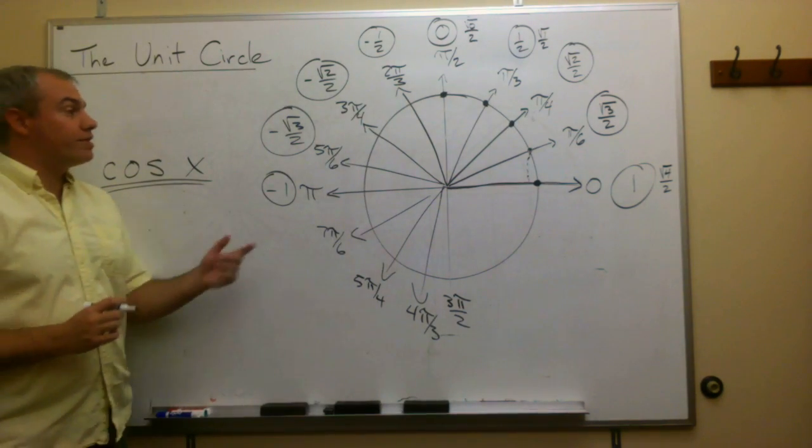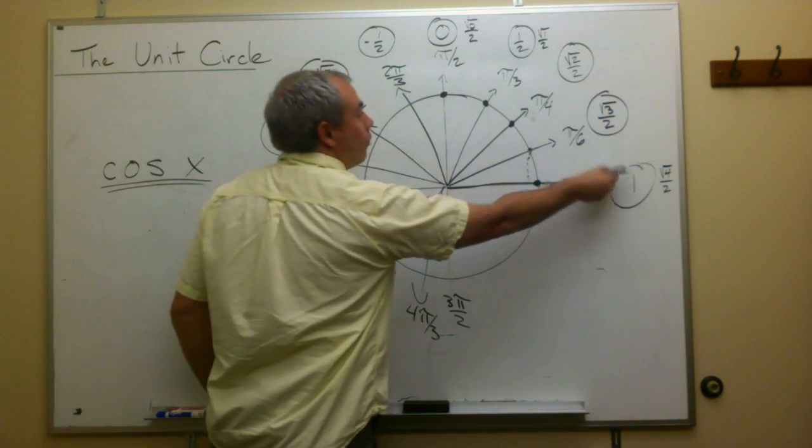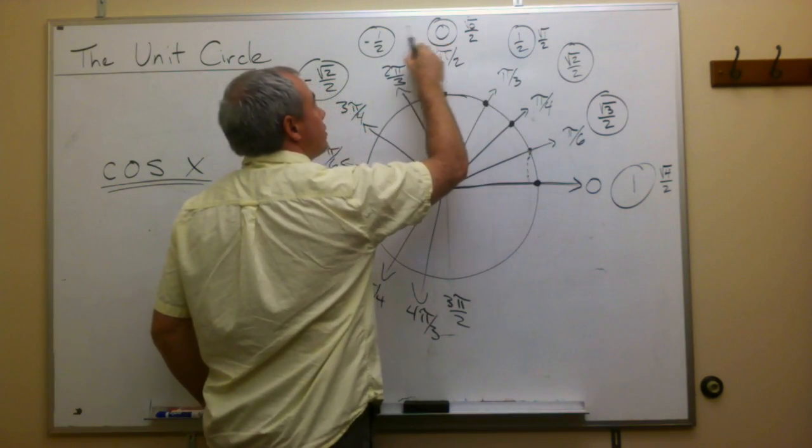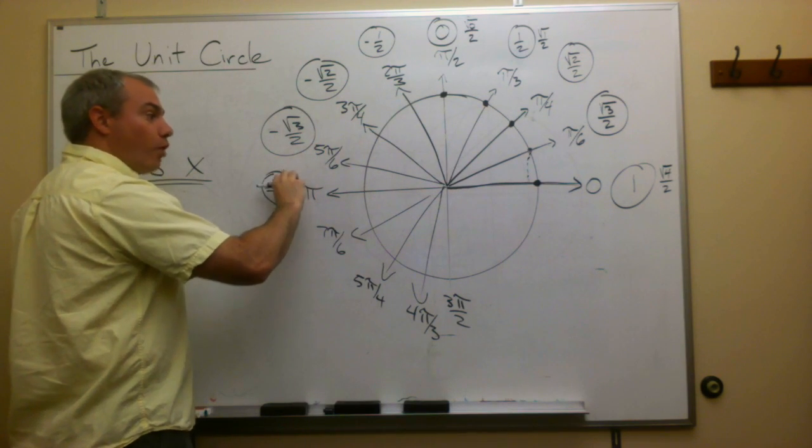And this would be 3 pi over 2. If we want the cosine of these different angles, then we keep the pattern going. Here we had 4, 3, 2, 1, 0, negative 1, negative 2, negative 3, negative 4. And now we walk backwards.